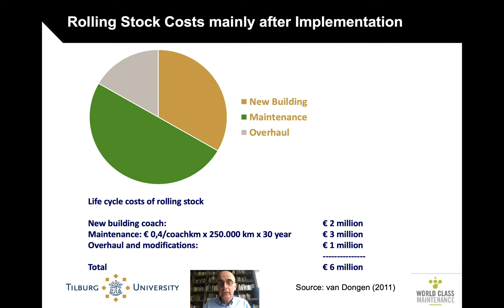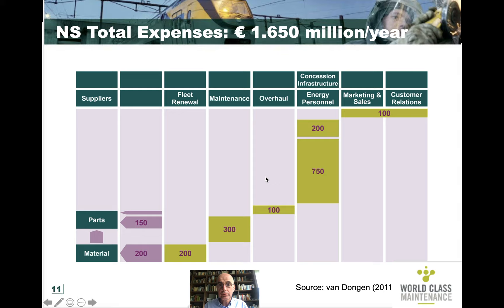This is significant because for those typical assets we talk about here — trains last a really long time — usually the original acquisition costs are a lot lower than the overall lifecycle cost, sometimes double, sometimes three times that amount. If you look at the annual cost at a company like Dutch Rail, they spend every year some 200 million on new trains but at least double that amount on maintenance overall.